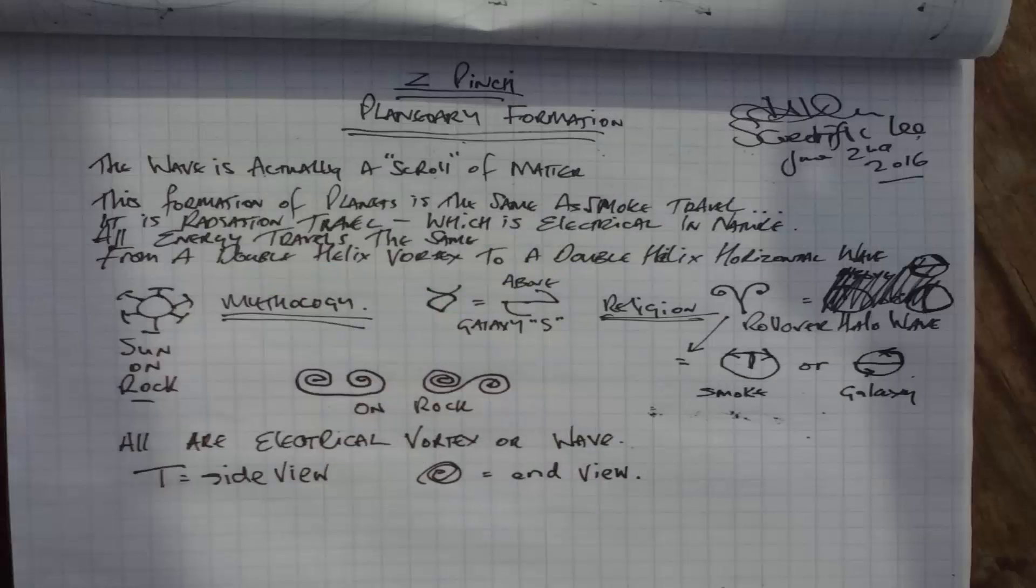So the z-pinch planetary formation wave is actually a scroll of matter. This formation of planets is the same as smoke travel - it is radiation travel which is electrical in nature. And all energy travels the same from a double helix vortex to a double helix horizontal wave.